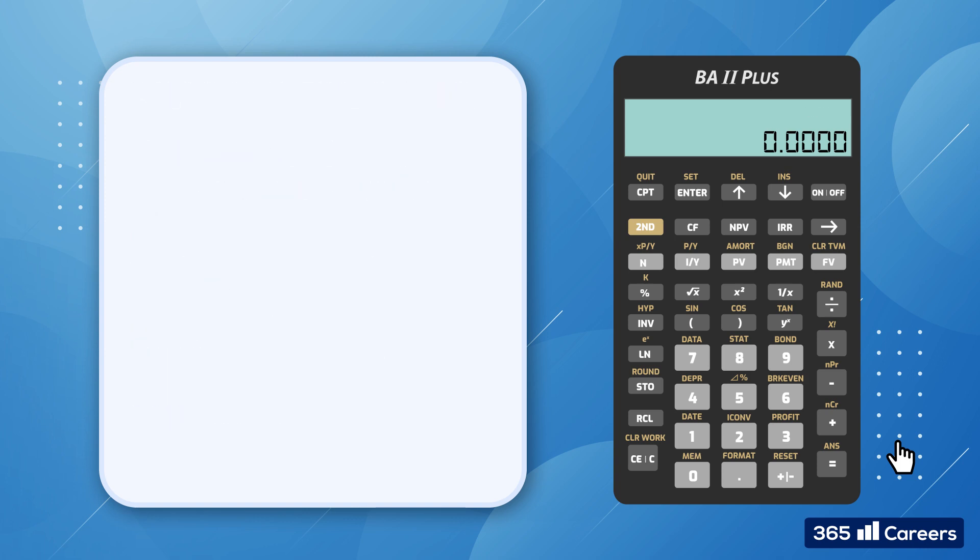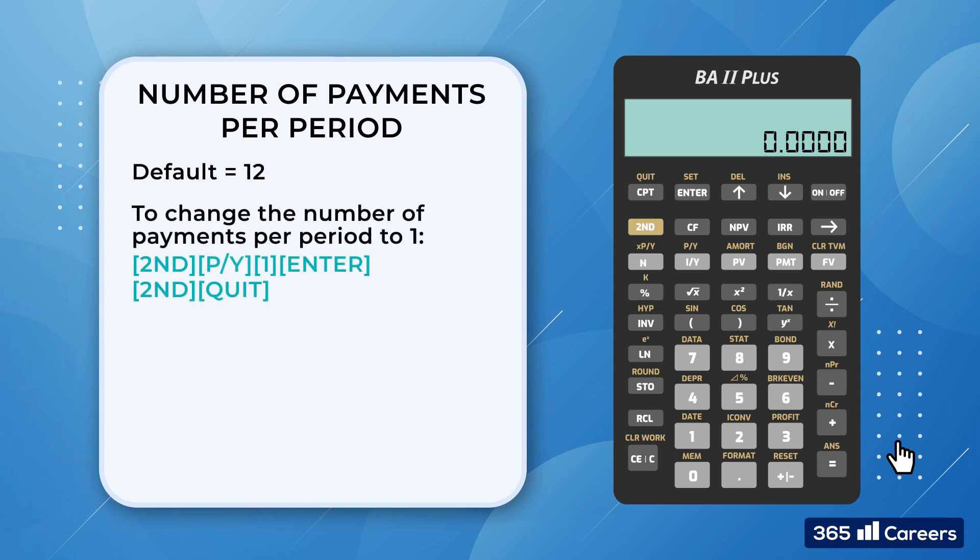Okay, the next step that we have to do is set the number of payments per period, PY. Although, it's worth noting that the default setting is 12 on some versions of the calculator. So, this means that the device automatically converts the annual interest rate, IY, into monthly rates. While it is appropriate for many loan type problems, this setting is not suitable when we tackle the time value of money questions. So, please, set the number of payments per period, PY, to 1 using this sequence of keystrokes.